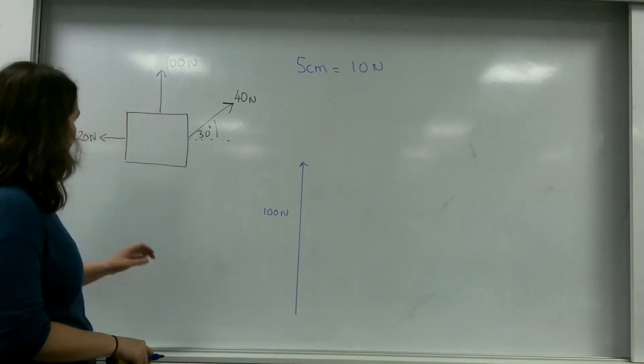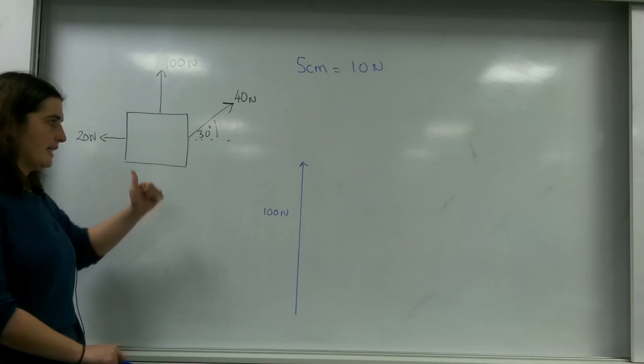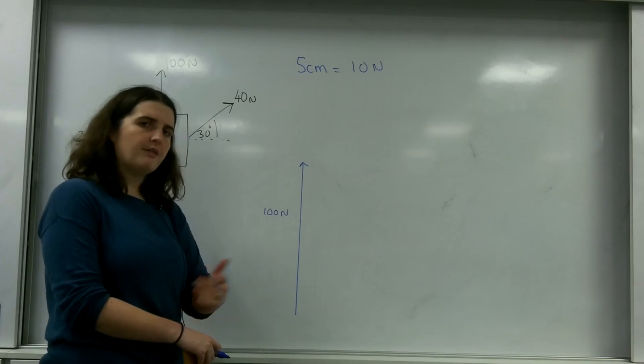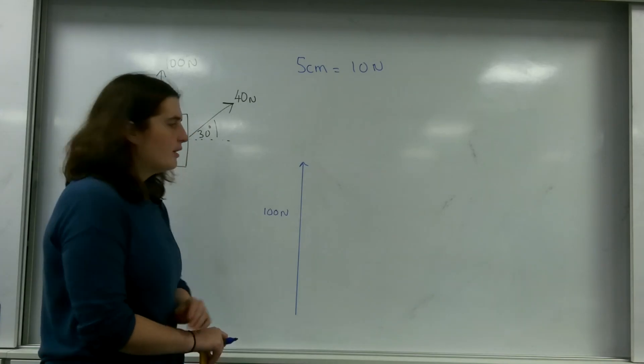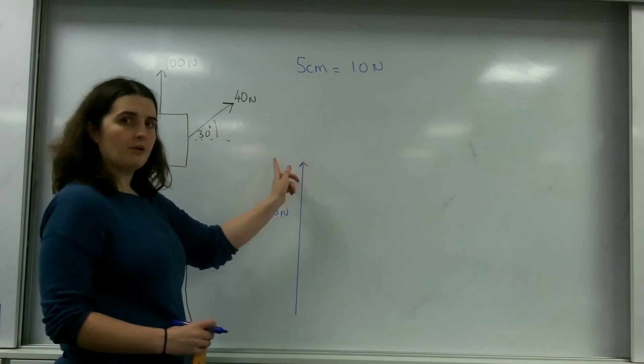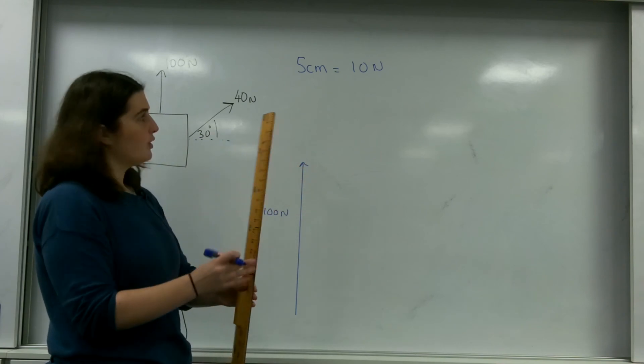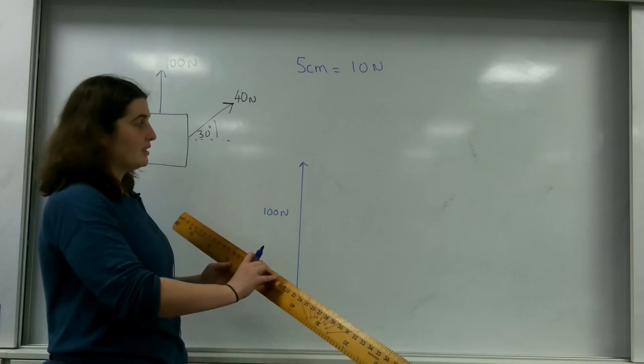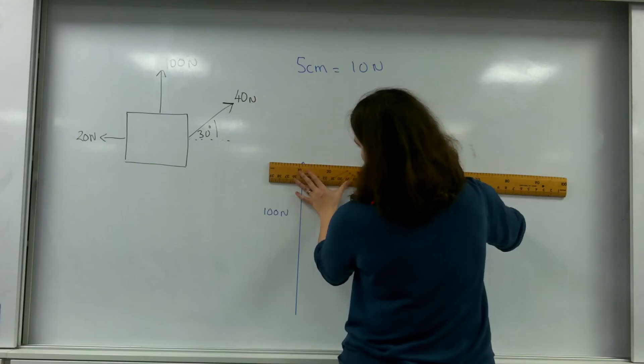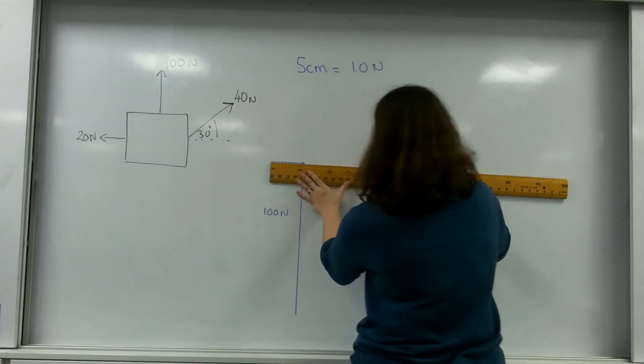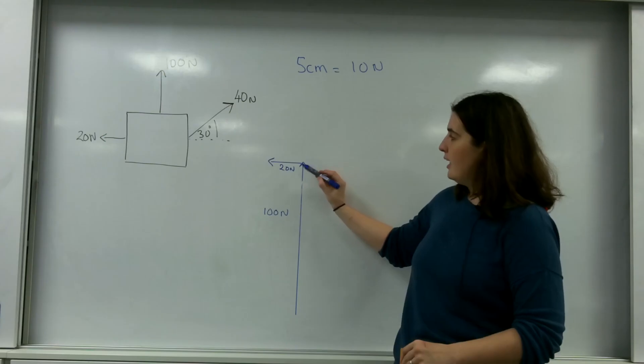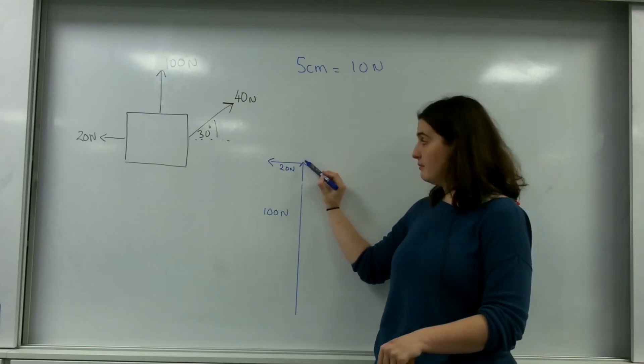I then have 20 newtons acting in this direction. How you draw vector diagrams is you draw one vector, then the other, then the other. So I will draw my 20 newtons vector by joining it onto the end of this. 5 centimeters is 10 newtons, so 20 newtons is going to be 10 centimeters. As you can see, my tail of this vector is at the tip of this vector.